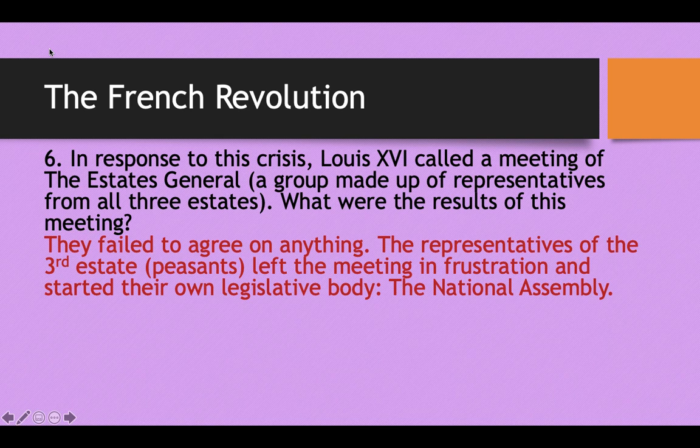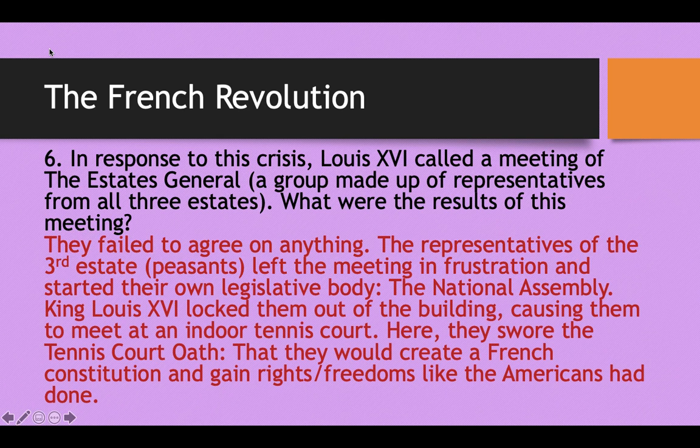So the representatives of the third estate — the peasants — left the meeting in frustration and said they were going to start their own legislative body: the National Assembly. Louis XVI decided to lock them out of the building for walking out. So the peasants ended up meeting at an indoor tennis court, where they swore what's called the Tennis Court Oath.